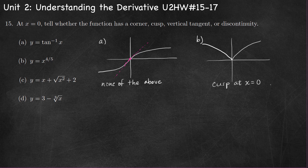It's not a vertical tangent and it's not a discontinuity. There is a point at (0, 0), and the limit as we approach from the left and the right is zero. So the graph is continuous at x equals zero.